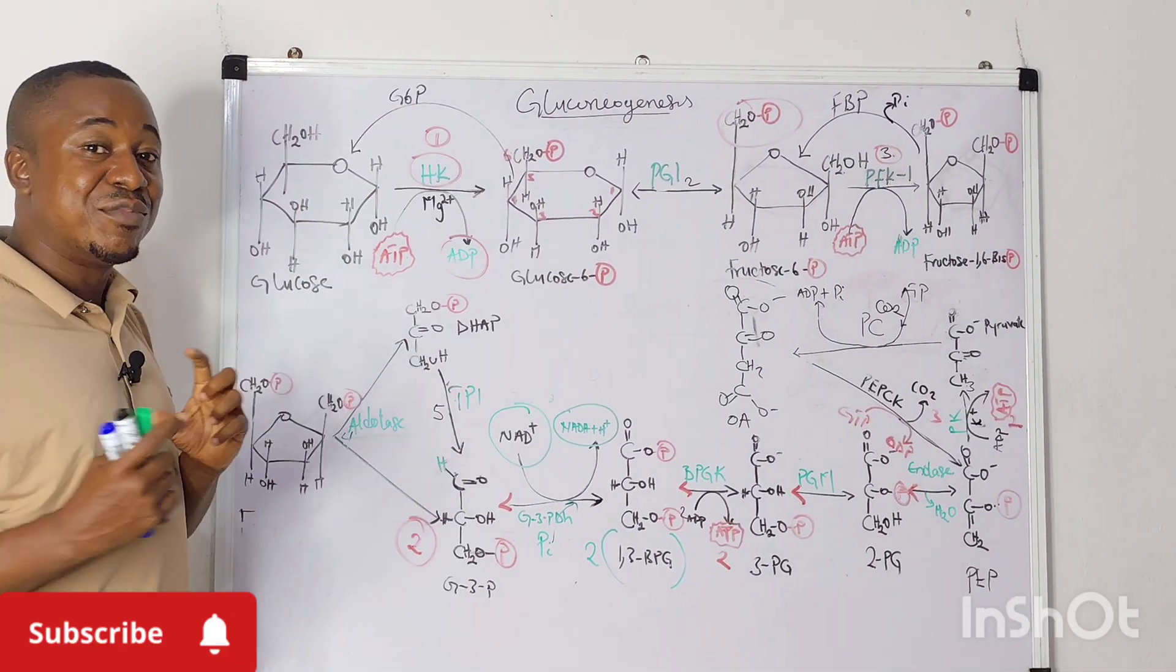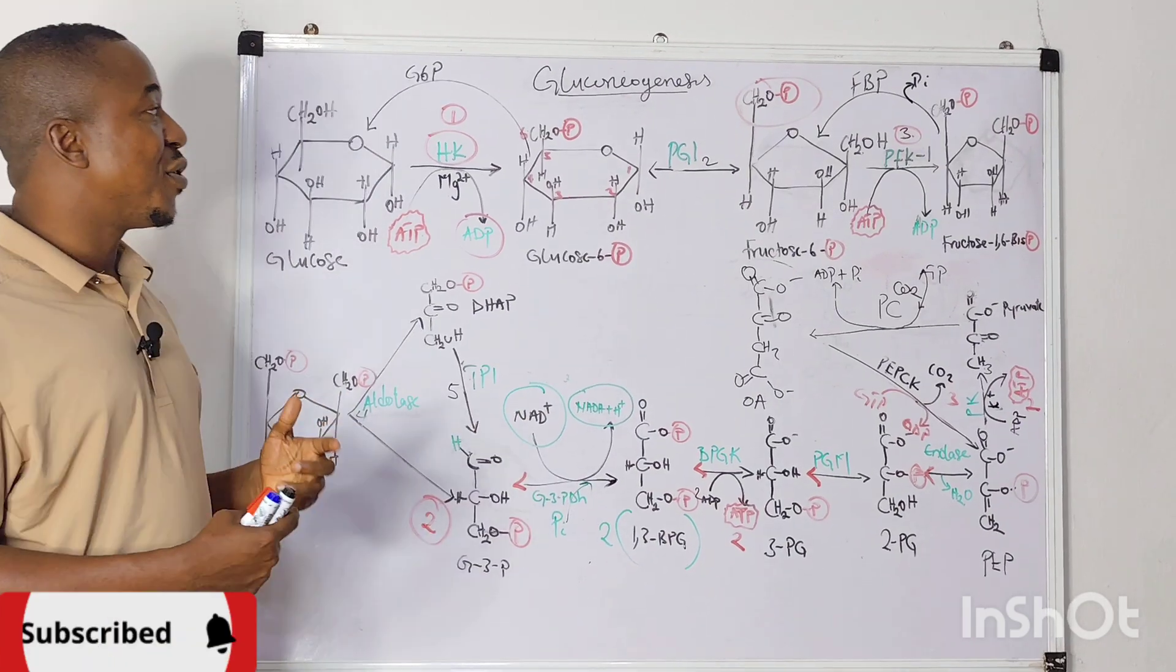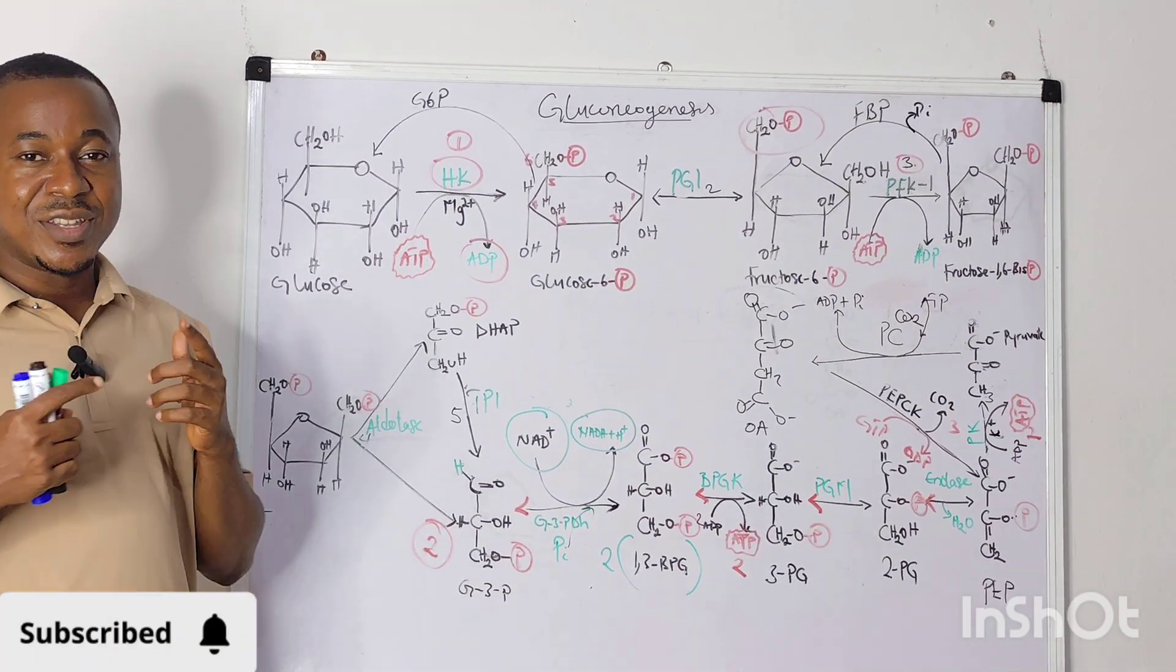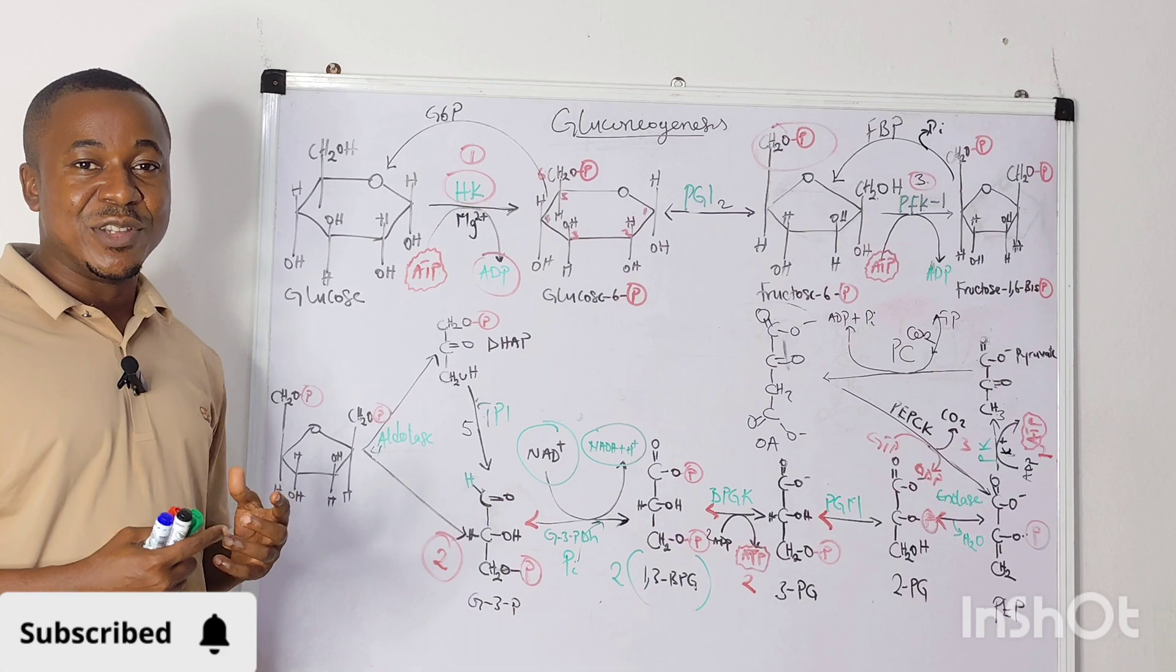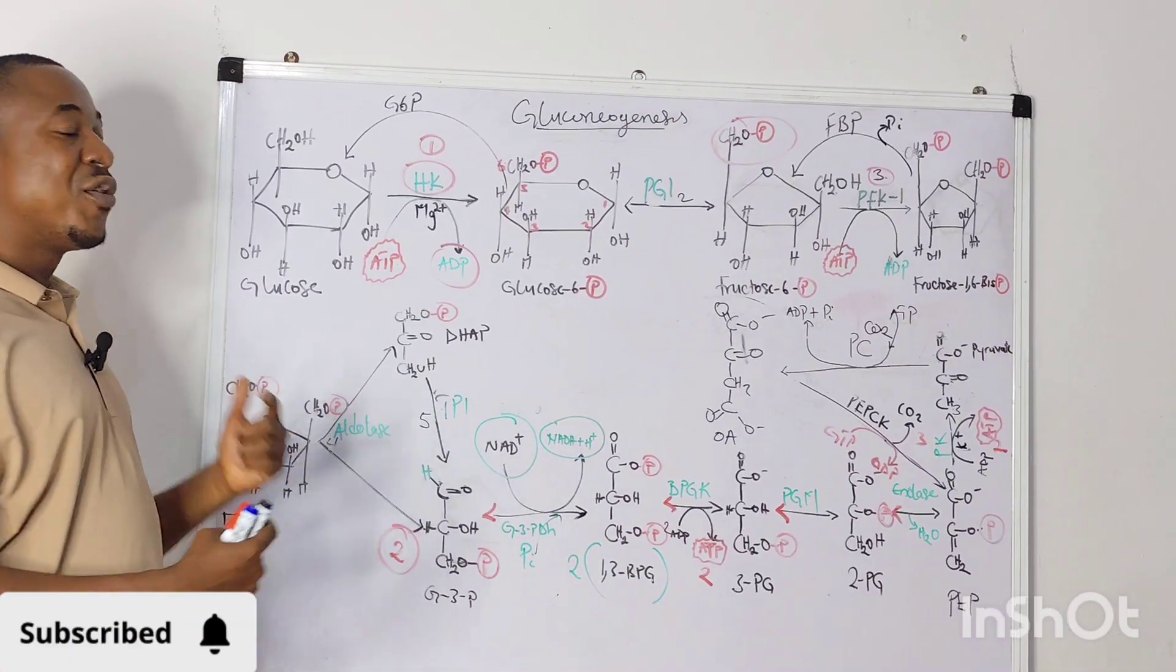Because gluconeogenesis is actually the production of glucose from non-carbohydrate precursors, what we use in producing glucose should not be from carbohydrates. Our major aim is to preserve the carbohydrate storage, so we need to get more glucose from non-carbohydrate precursors.